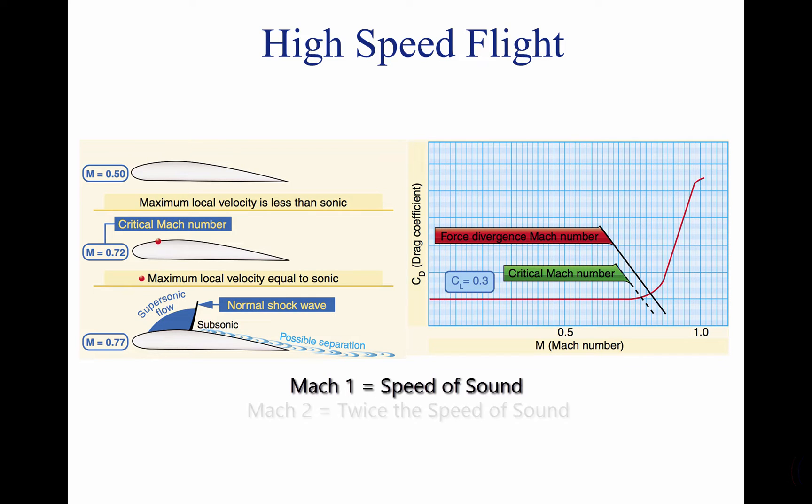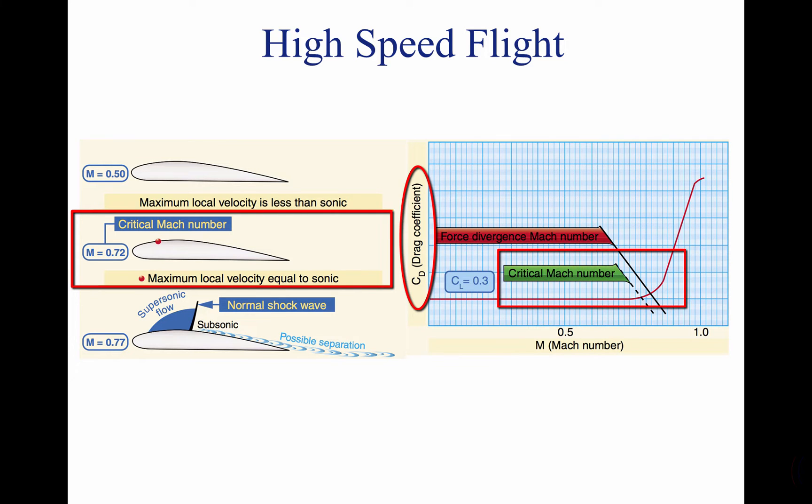Twice the speed of sound would be written as Mach 2, and half the speed of sound would be written as Mach 0.5. The above pictures show the points where this happens and also the resulting drag. Mach speed is always given in relation to the aircraft's actual speed through the air and not the indicated air speed.